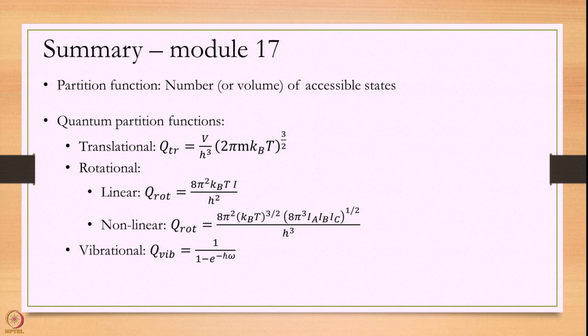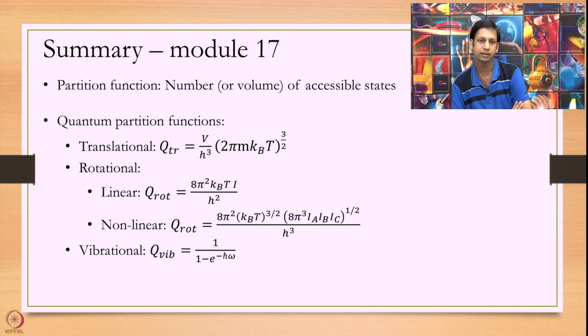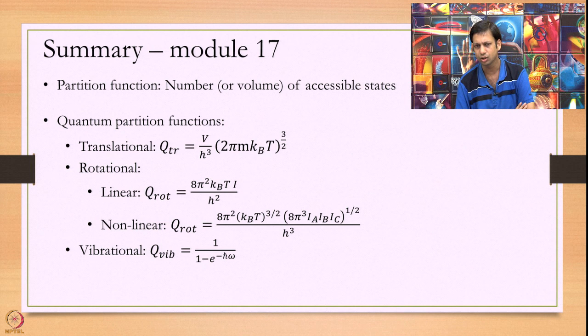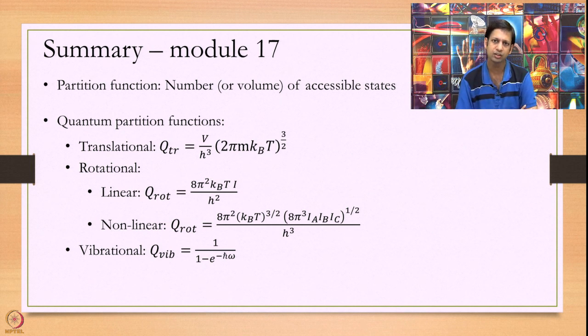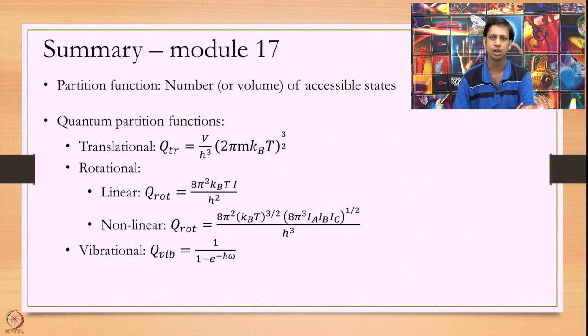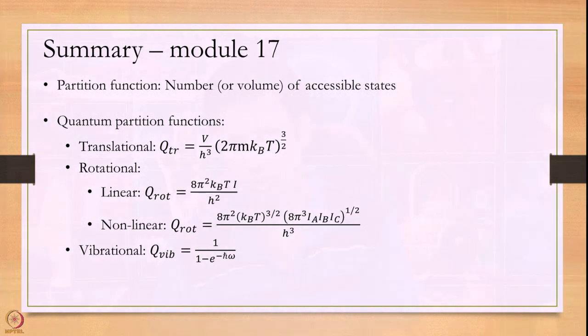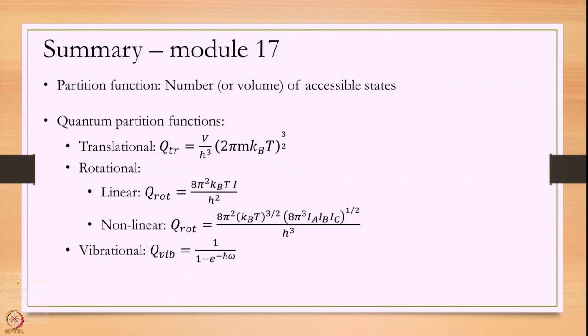In summary, today we looked at the physical meaning of partition functions as the number or volume of accessible states at a given temperature. We examined quantum partition functions and found that for translation and rotation we can use the same classical formula, but for vibration we must use the quantum formula: q_vib = 1/(1 − e^(−βħω)). We also introduced the electronic partition function. Thank you very much.